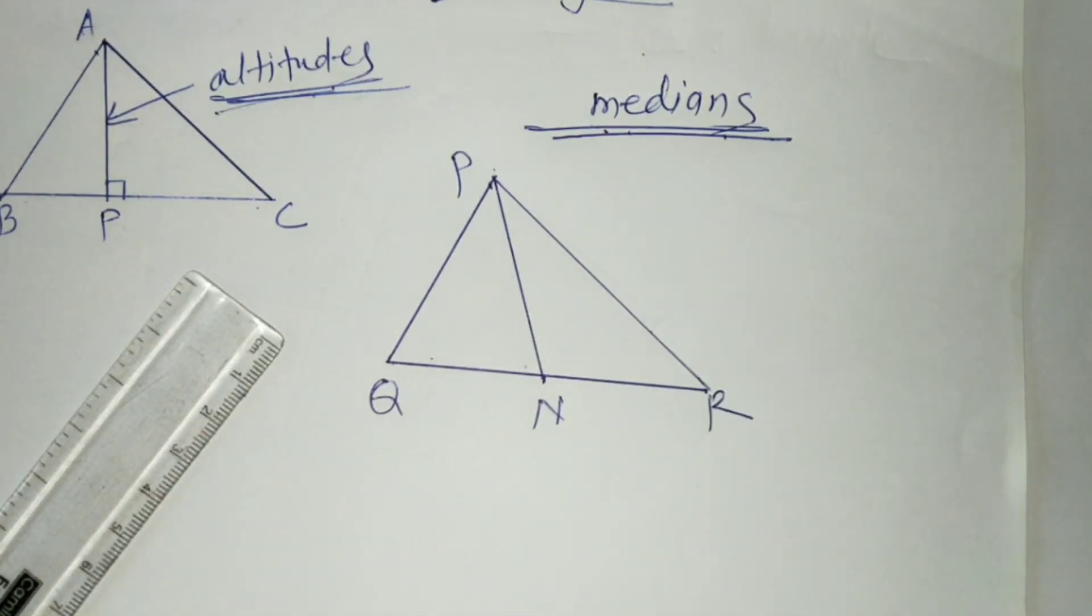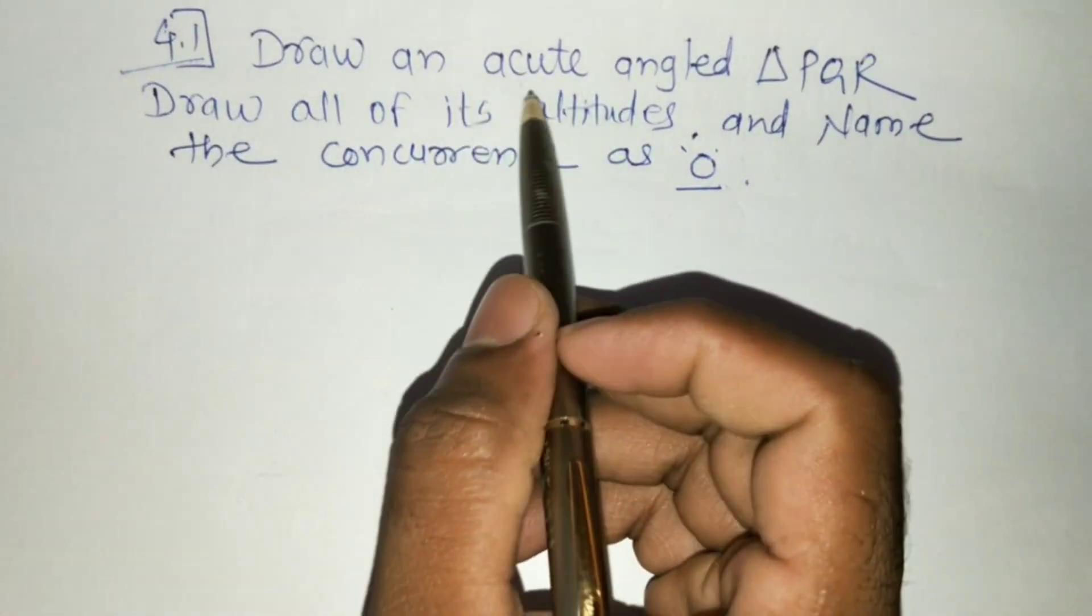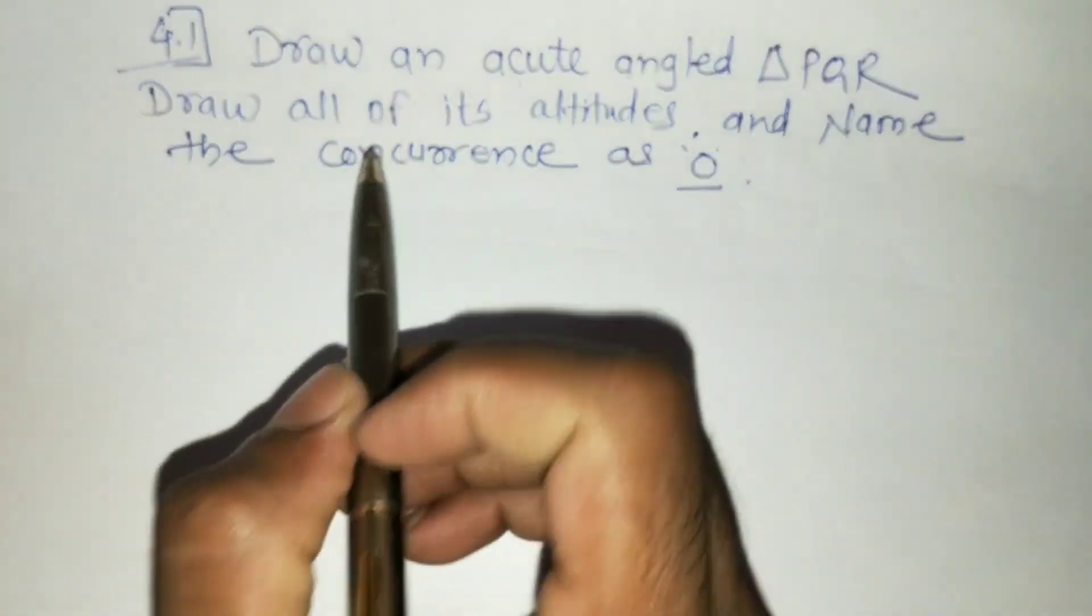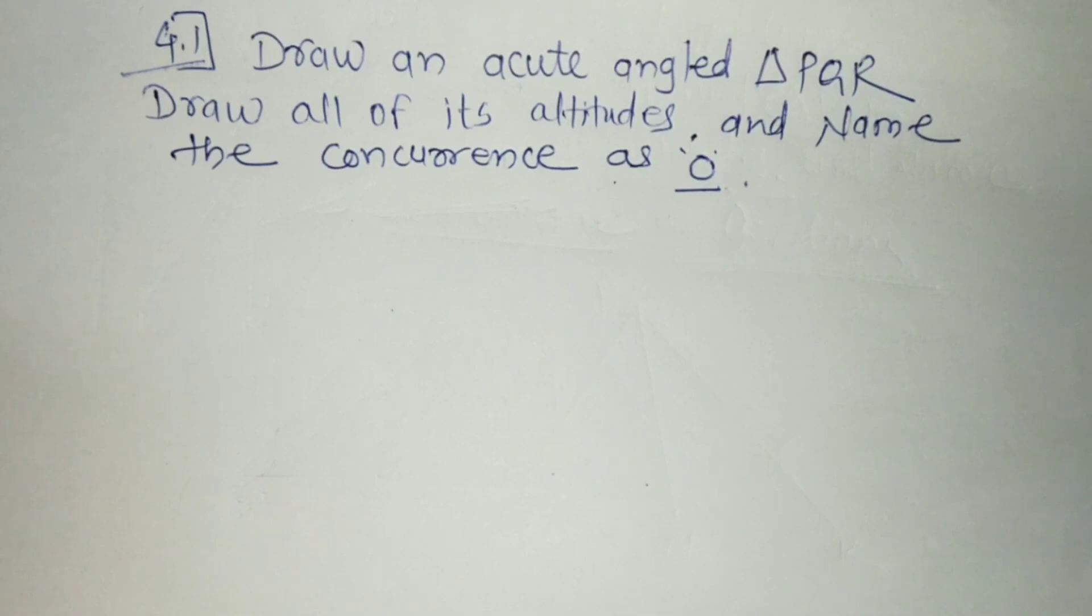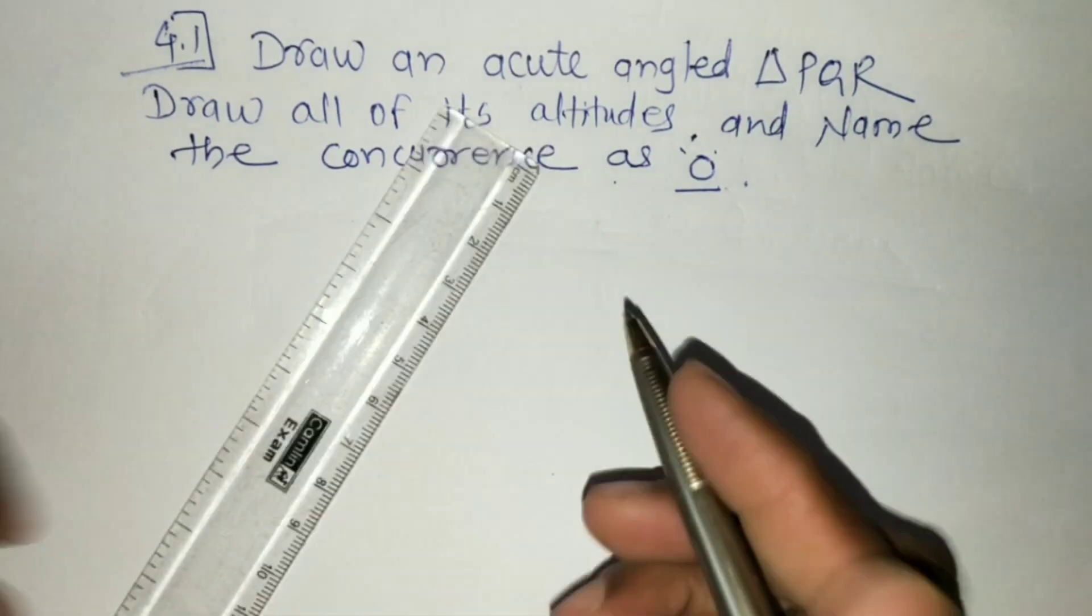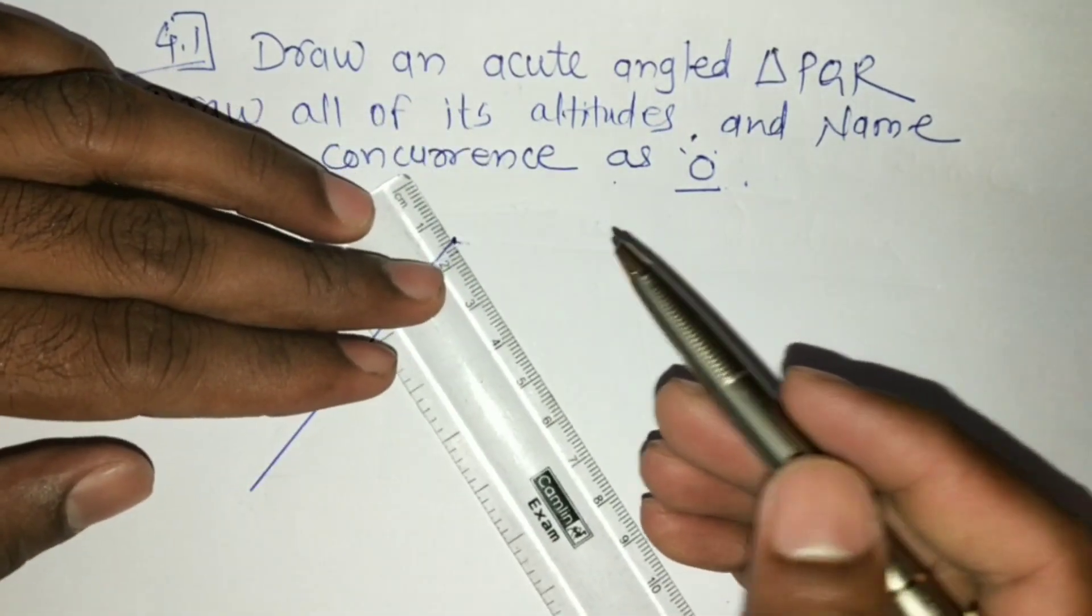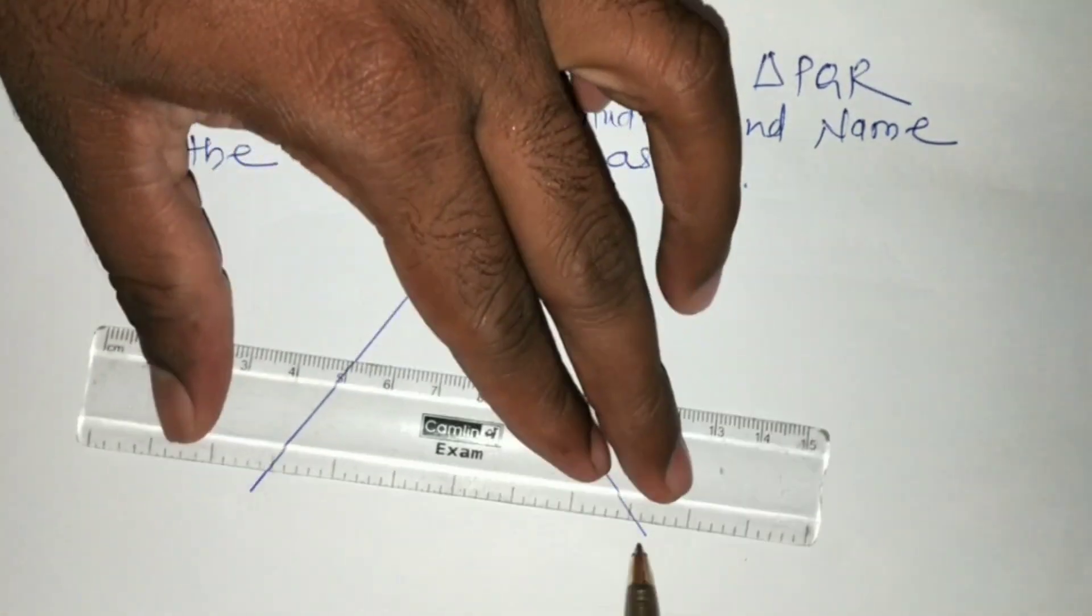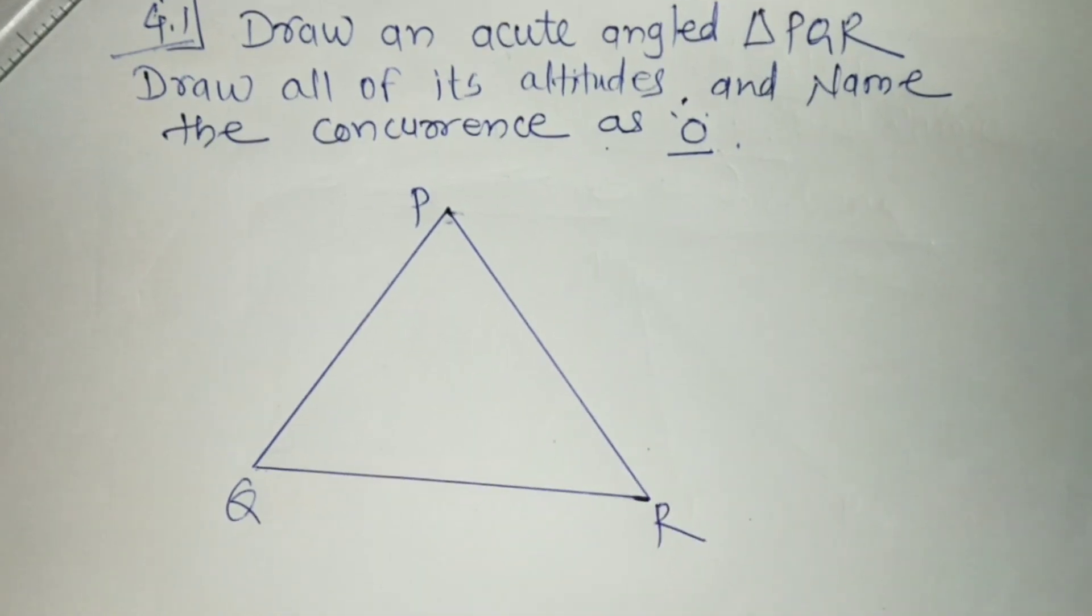So let's learn a few examples. Here is practice set number 4.1. The question is draw an acute angle triangle PQR, draw all of its altitudes and name the centroid as O. So first we have to draw an acute angle triangle. This is PQR, an acute angle triangle.